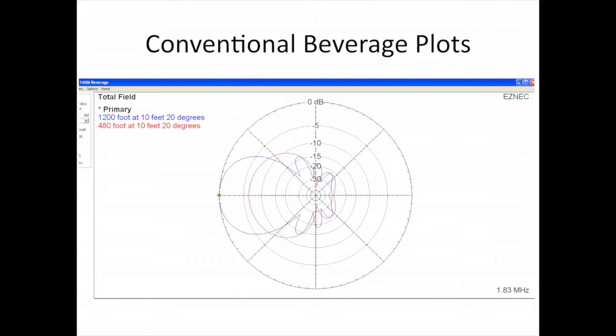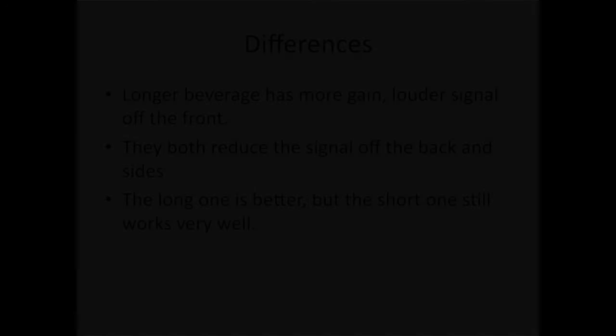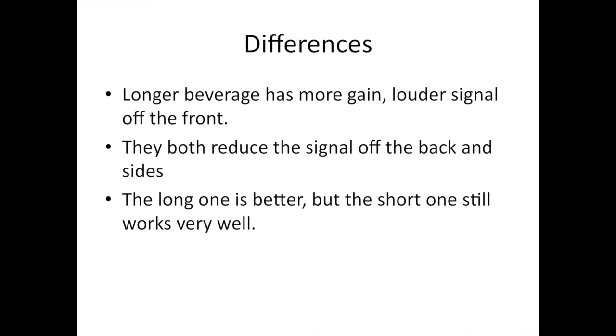Now here are two conventional beverage plots. The elevation or takeoff angle is 20 degrees. These are two 10 foot high beverages, one 1200 feet long and one 480 feet long. Now there are some differences in the two beverages. The longer beverage has more gain, which means a louder signal off the front. They both reduce the signal off the back and sides. The long one is better, but the short one still works very, very well.